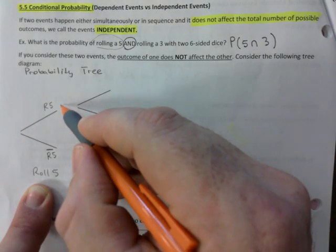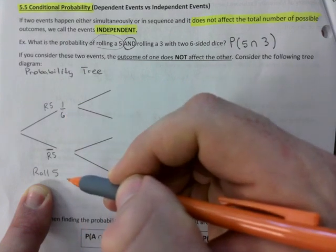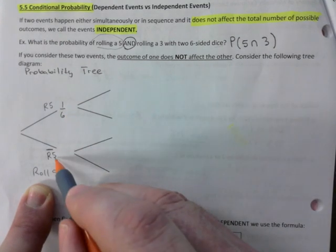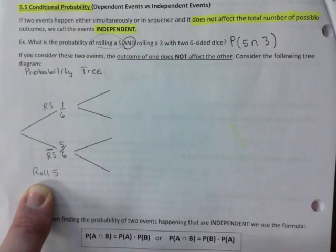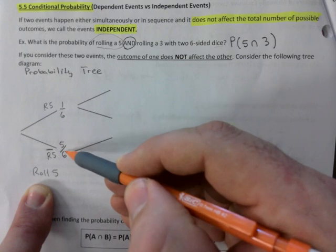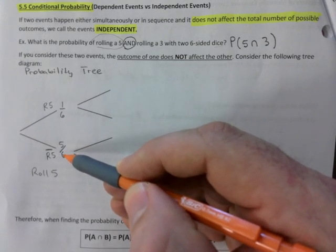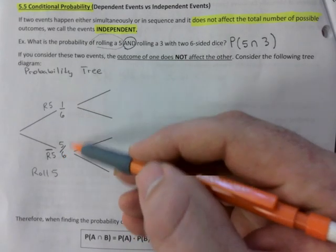Not rolling a five, correct. That's usually how the tree diagram works. So what's the probability of rolling a five? One out of six, obviously. What's the probability of not rolling a five? Five out of six, obviously. So these two add up to what? One, right. Six out of six, one, a hundred percent. Remember that because I'm saying it for a reason.